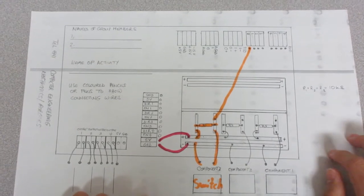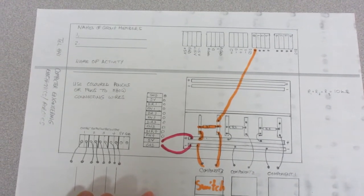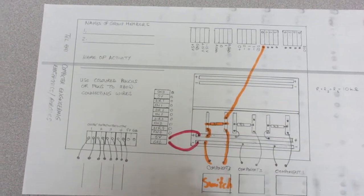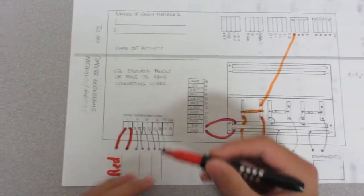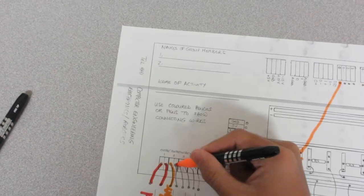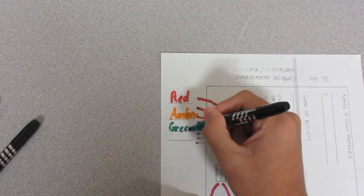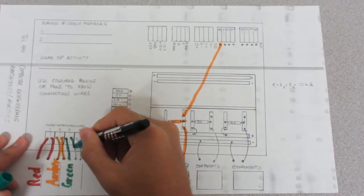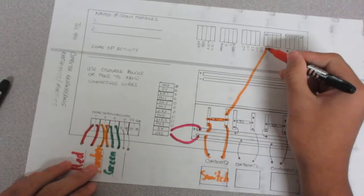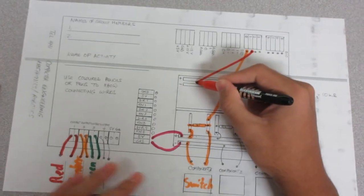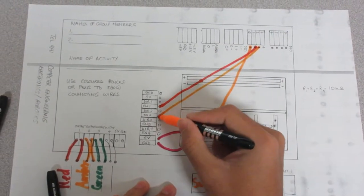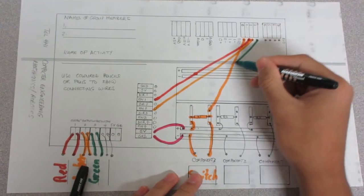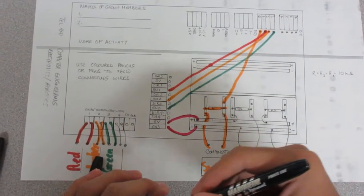To wire the three traffic lights, connect the light bulbs to the outputs. Connect the red light bulb to output 1, the amber light bulb to output 2, and the green light bulb to output 3. Then use wires to connect DIO1 to EN1, DIO2 to EN2, and DIO3 to EN3. That's how you wire the lights.